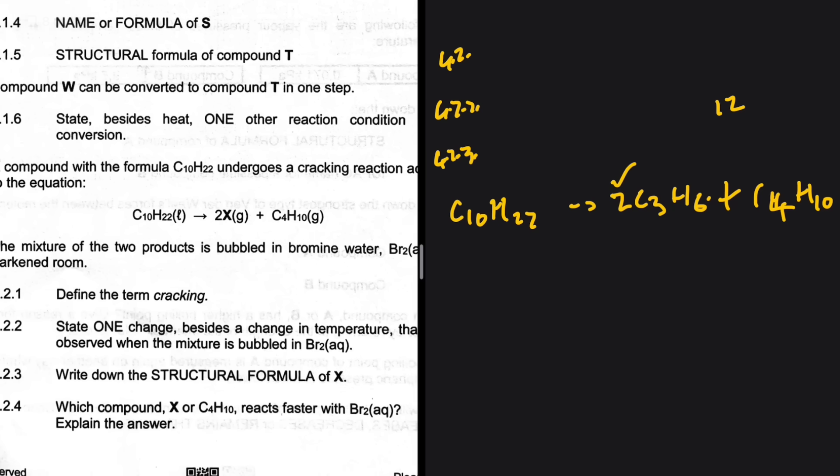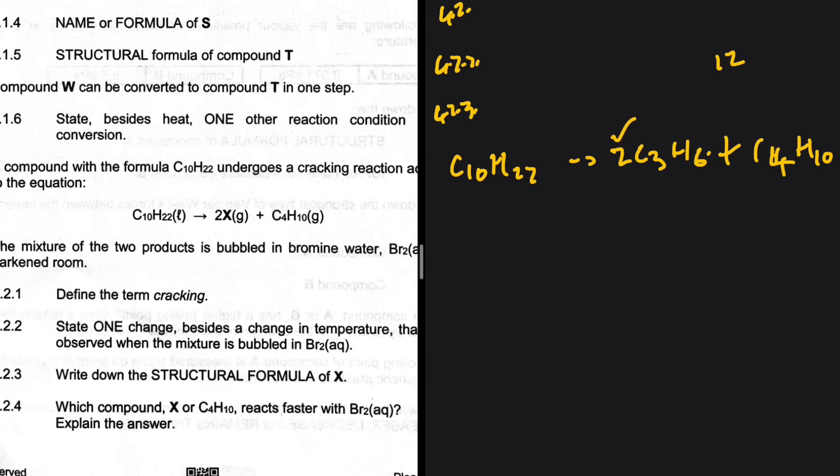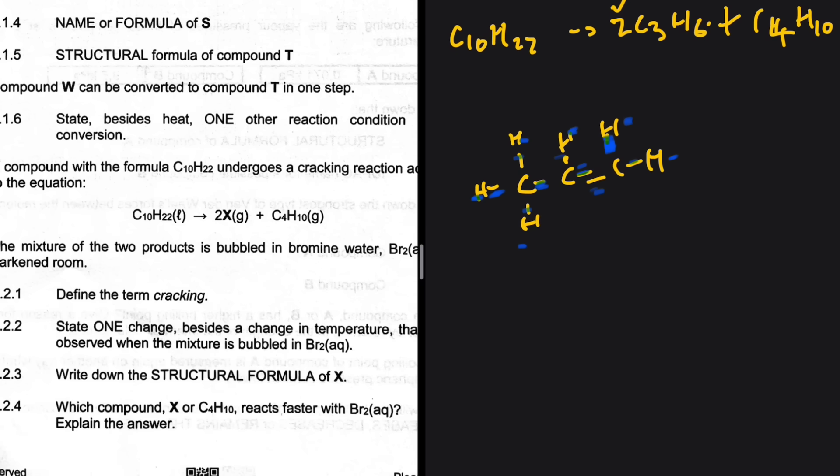The structural formula of X. X is unsaturated, there has to be a double bond. One-two-three, the position of the double bond does not matter because it would mean the same thing either way. That's what we have. Let me check, this is one-two-three-four-five-six, one-two-three-four. Okay, happy with that structure of X.